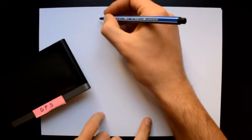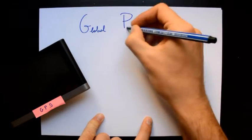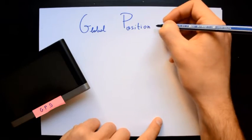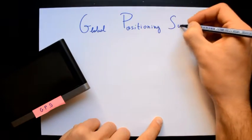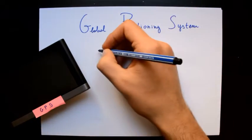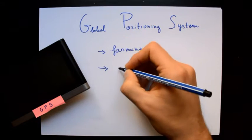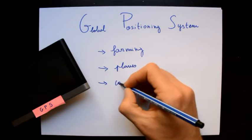The GPS, or Global Positioning System, is a navigation tool used by millions of people every day. It is used in planes, in farming, and in the construction of roads.